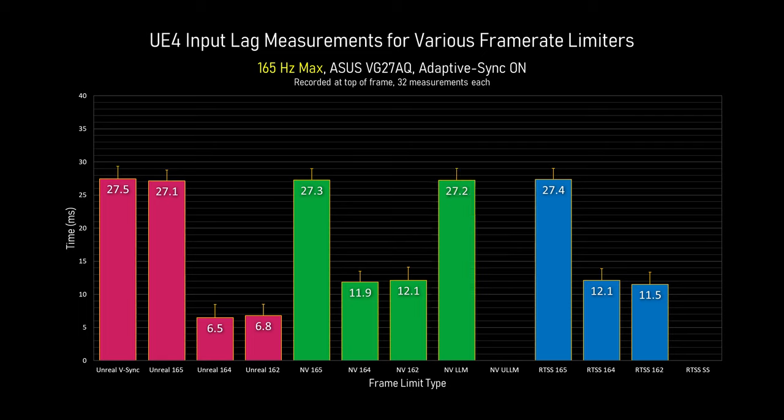Next up is NVIDIA's low latency mode, or LLM. This is identical to the old 'set max queued frames to one' option, but it doesn't do anything for Unreal. Ultra low latency mode, ULLM, new since August last year, does do something. At 165Hz it's actually capping the frame rate to about 157, but it performs identically to the other external limiters. So why use ULLM if capping the frame rate works just as well? We'll get to that soon, I promise.